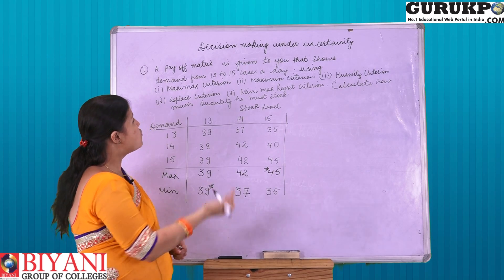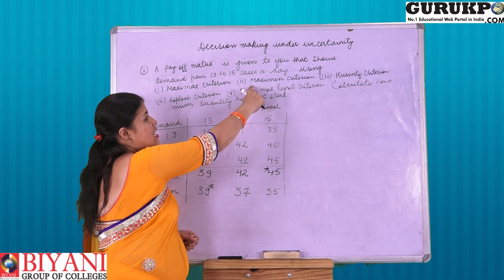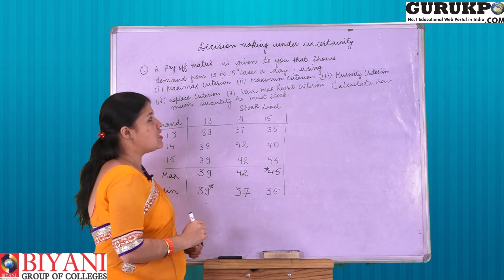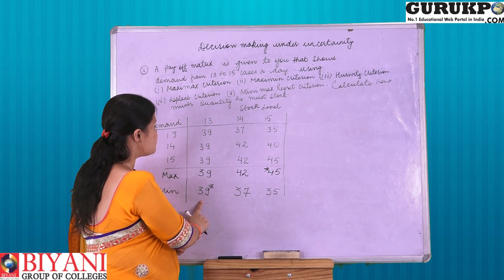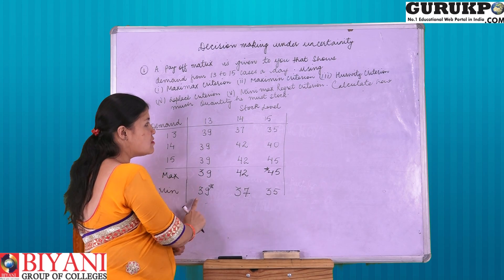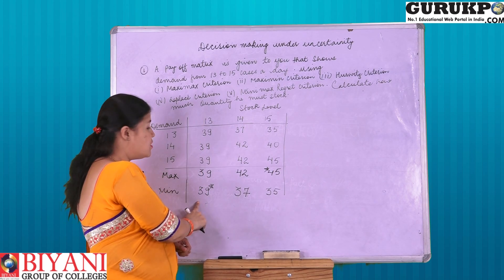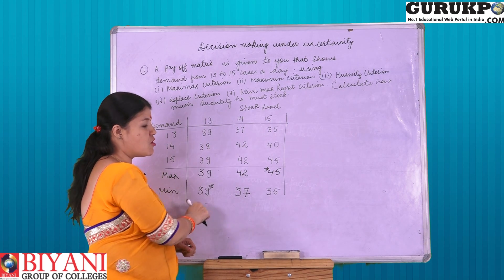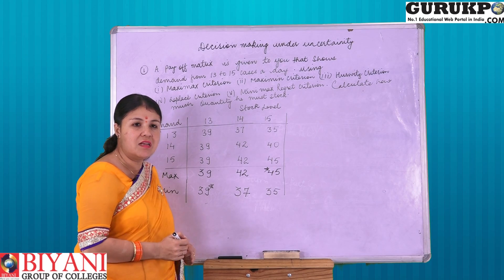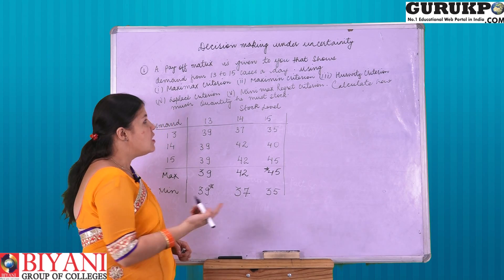So, as per Maximin criteria, the decision maker will choose stock level 13 in order to maximize its profit of 39 rupees.